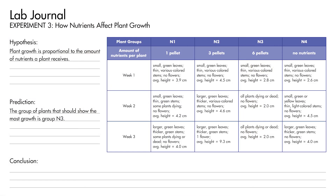Did this experiment confirm the hypothesis that plant growth is proportional to the amount of nutrients a plant receives? The plants in group N3 were given the most fertilizer and should have been the tallest, but they were not — in fact, those plants died. The tallest plants are in group N2. From this experiment, we conclude that plants need a certain amount of nutrients, and that too little or too much fertilizer can be harmful to plants. Record your conclusion in your lab journal.